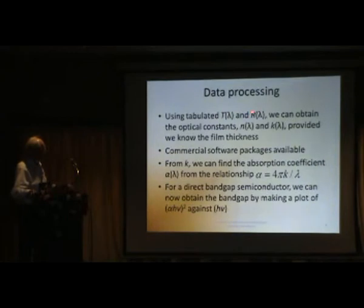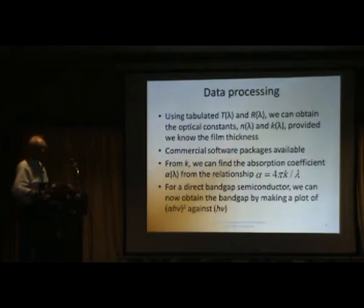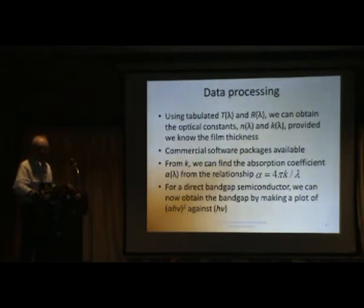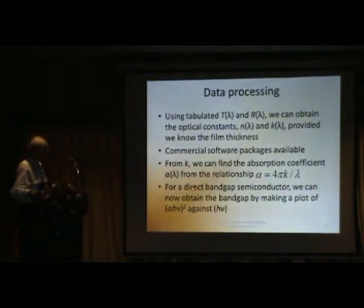When we have our values of T(λ) and R(λ) for our sample, we obtain the optical constants, provided that we know the film thickness. We can use software packages to obtain N and K as a function of lambda. I use a package commonly called TED-CALC, written by a small company in Oregon. It's quite expensive but very good and fast. There are many other commercial software packages available. From K, you can find the absorption coefficient: alpha = 4πK/λ. From alpha, we can then make what I call a Tauc plot.